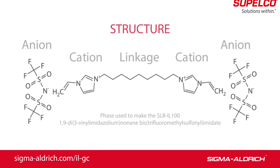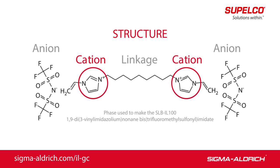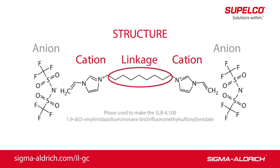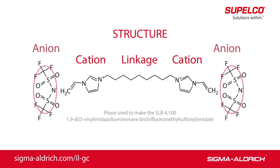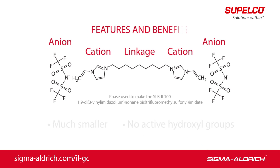Ionic liquid GC stationary phases consist of two or more organic cations joined by a linkage and associated with anions, which can either be inorganic or organic. Ionic liquids differ physically and chemically from non-ionic liquid stationary phases.